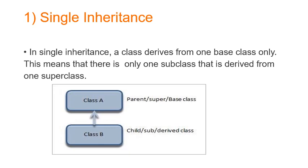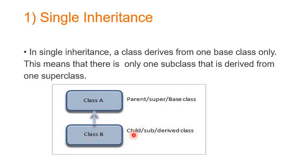Single inheritance: a class derived from one base class is known as single inheritance. This means there is only one superclass. A is the superclass, parent class, or base class, and it is inherited by class B, which is also known as the child class, subclass, or derived class.